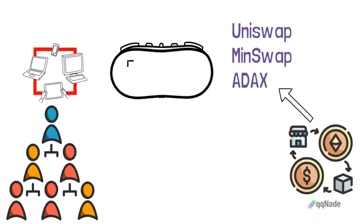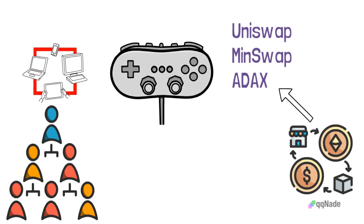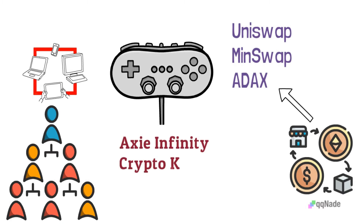Some examples of decentralized apps include decentralized exchanges like Uniswap, Minswap, ADAX, etc. Other examples of decentralized apps are games like Axie Infinity and CryptoKitties.